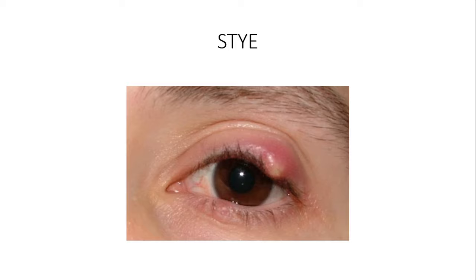External hordeolum refers to an abscess or acute infection at the root of the eyelash, where we have two major glands — the gland of Moll and the gland of Zeis. Either one or both of them can be involved, and it is quite painful.